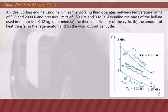Here are some problems related to external combustion engines. Guided problem solving number one: an ideal Stirling engine using helium as the working fluid operates between temperature limits of 300 and 2000 Kelvin, and pressure limits of 1500 kPa and 3 MPa. Assuming the mass of helium used in the cycle is 0.12 kilogram, determine the thermal efficiency of the cycle, the amount of heat transfer in the regenerator, and the work output per cycle.